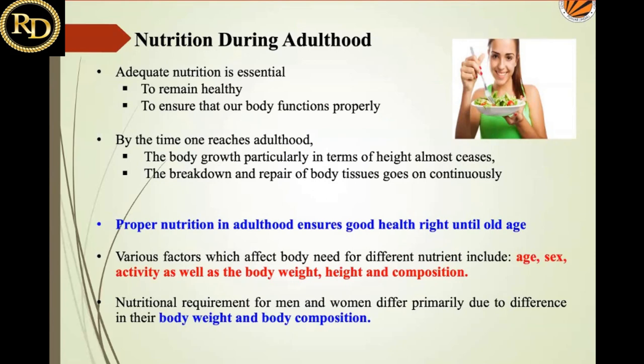In adulthood, we must maintain positive health through adequate nutrition. The energy requirement is highest during adolescence and then becomes constant in adulthood. There is no need for extra protein or extra calcium beyond the RDA — the body only needs essential nutrients to function properly. Height ceases to increase after puberty since growth hormones are suppressed.